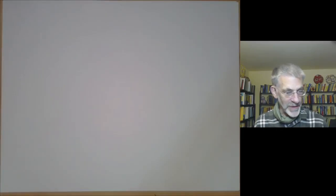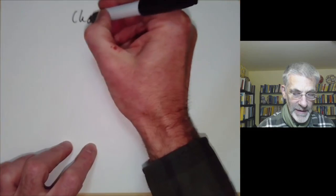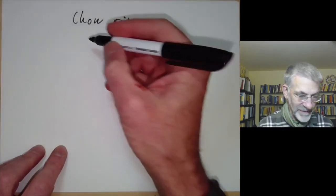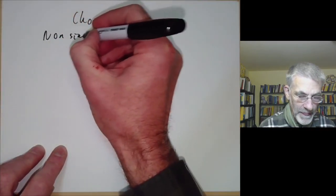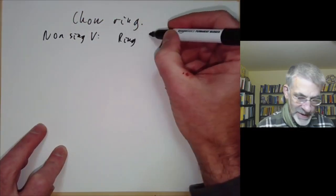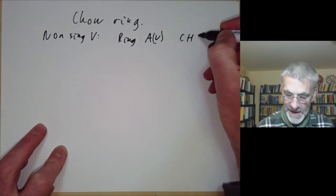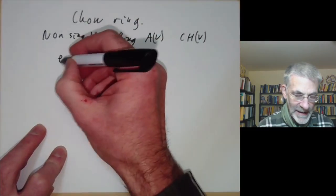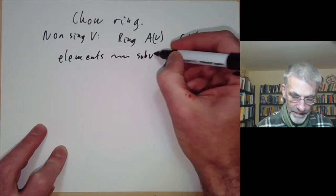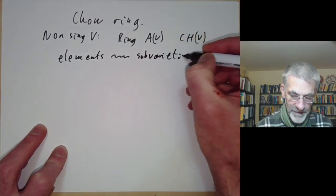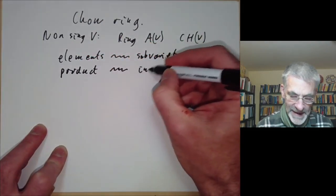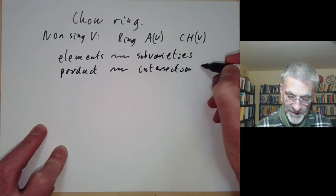This talk will be an introductory overview of the Chow ring in algebraic geometry. The Chow ring is the following: we take a non-singular variety V and form a ring, denoted A of V, or sometimes CH of V. The elements of the ring are something to do with sub-varieties of V, and the product of two elements is going to be something to do with the intersection of two sub-varieties.